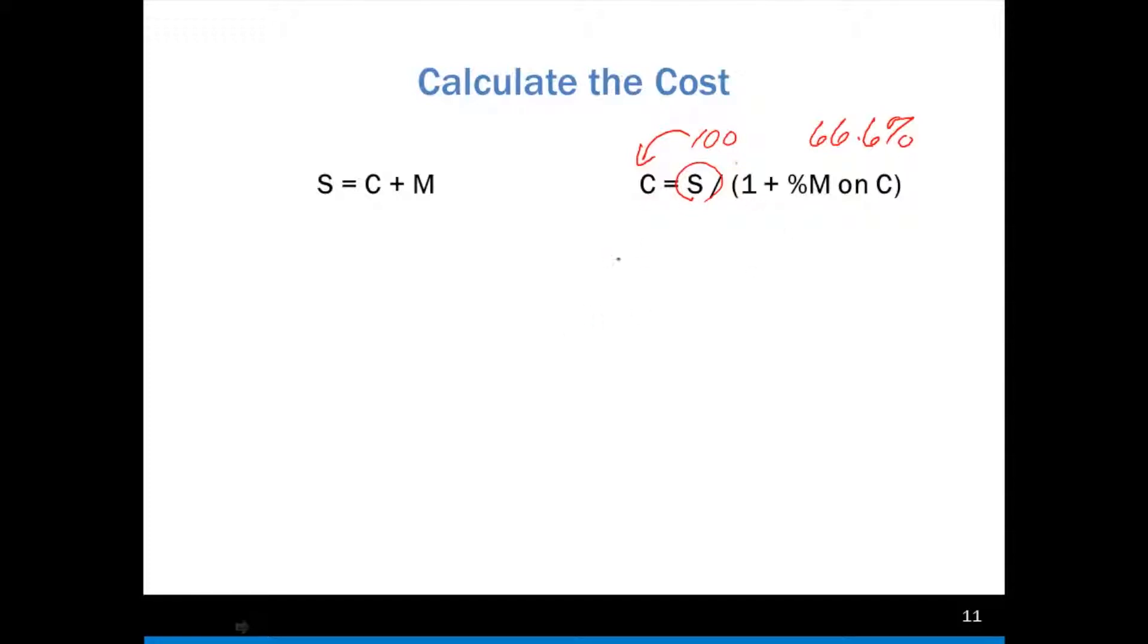Here we still have the 66, but we knew the cost, and we wanted to find out the selling price. We do that multiplying. Here, percent markup, we know the selling price. We want to figure out the cost, and notice that we're dividing here. So let's do the math. We know the 100 is our selling price. And again, 1 plus the markup, 66.6%, and that is 1.666. So when we take 100 in our calculator and divide it by 1.666, we end up with our cost of $60.